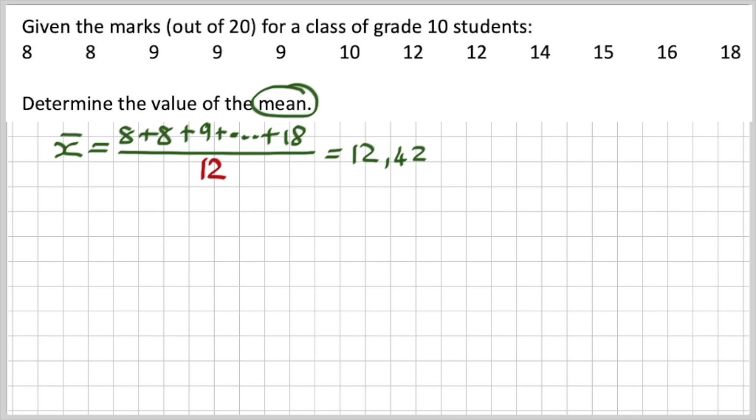So what does this actually mean? What this actually means, ladies and gentlemen, is that if I pick someone at random in this class, I can kind of expect their mark out of 20 to be about 12.42. That is the mean.